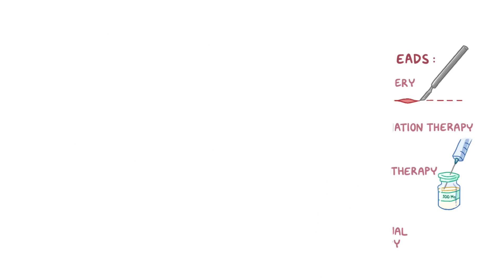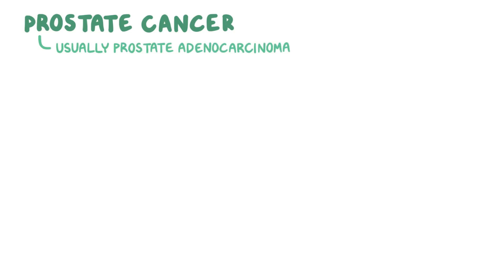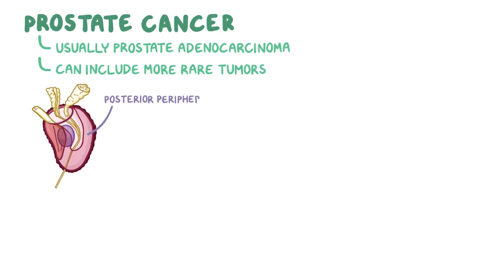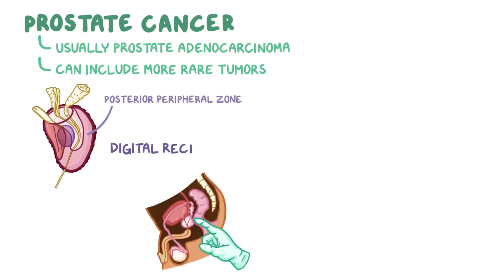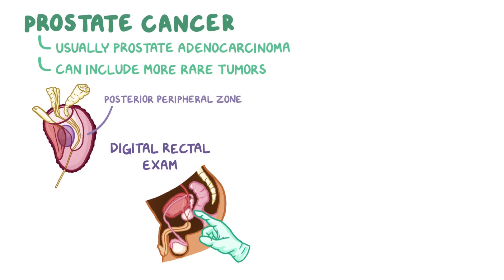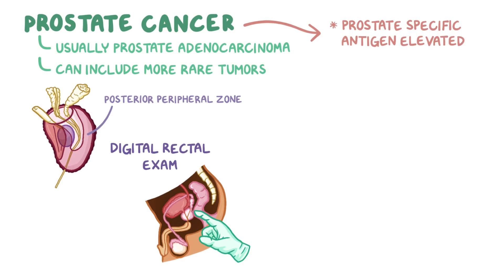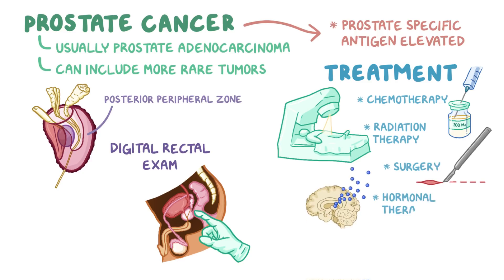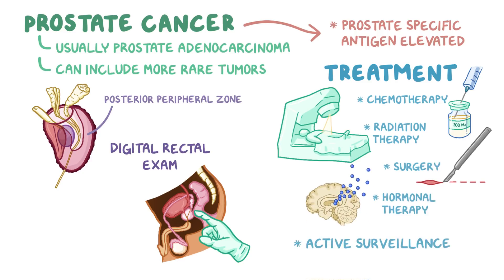As a quick recap: prostate cancer usually refers to prostate adenocarcinoma, but can also include more rare types of tumors. It typically starts in the posterior peripheral zone of the prostate and can be detected using a digital rectal examination. Typically, serum prostate-specific antigen is also elevated in prostate cancer. Treatment might include chemotherapy, radiation therapy, surgery, and hormonal therapy, but active surveillance is also an option in many cases where it's localized to the prostate.